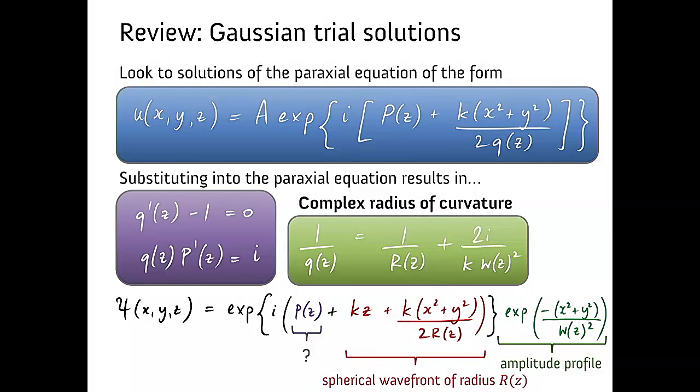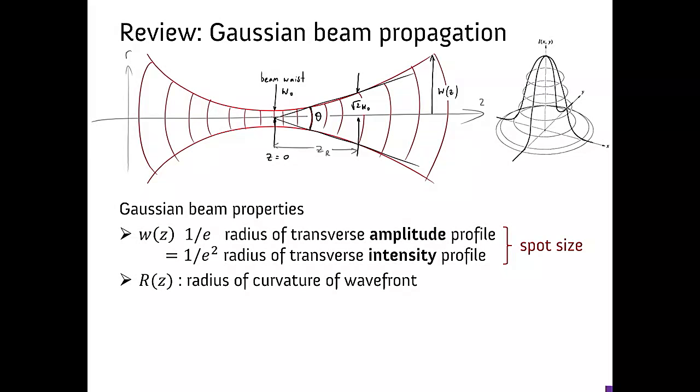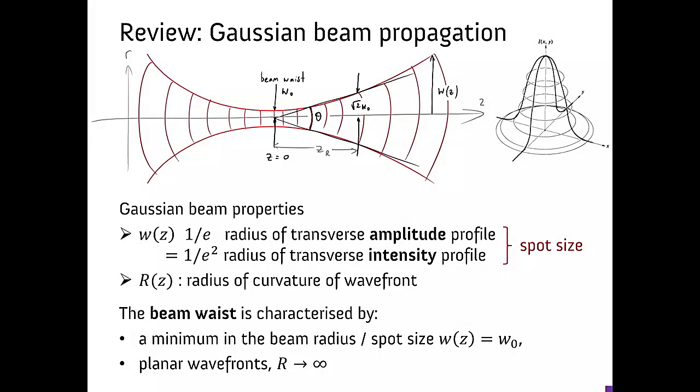There was this mystery function P. What does that do? Well, we'll get to that in a second, but the waist function Z looks like this when we plot it and it has the following properties. The spot size or radius of the transverse amplitude profile was characterised by a minimum W0 and we also saw at the waist that the wave fronts were completely planar.